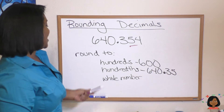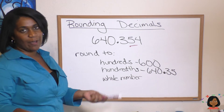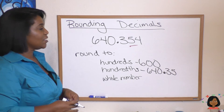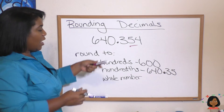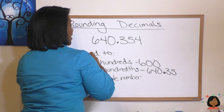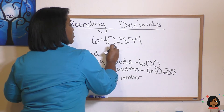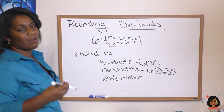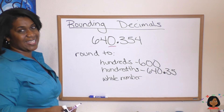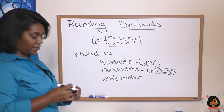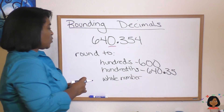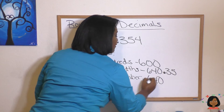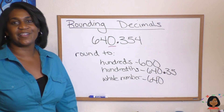One last one. If I said let's round this to the whole number, that means we want to drop our fraction piece. So we're going to highlight our zero because that's in the ones place and look to the right. We see it's a 3. We know a 3 is less than 5, so we get to keep our zero. We're going to round this to the whole number 640.